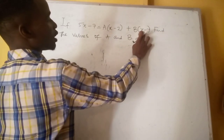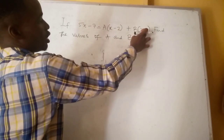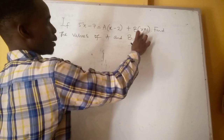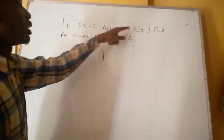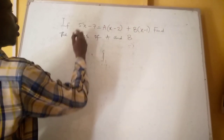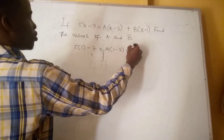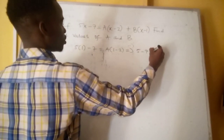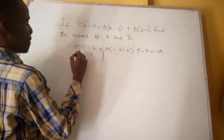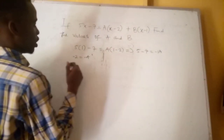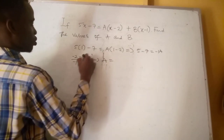We have (x minus 1) here, so the additive inverse to give us 0 is plus 1. If we have minus 1, substituting x = 1 makes it plus 1 minus 1 = 0, and 0 times b gives us 0. So anywhere we see x, we substitute with 1. We get: 5(1) minus 7 = a(1 minus 2), which is 5 minus 7 = minus a, so minus 2 = minus a, giving us a = 2.